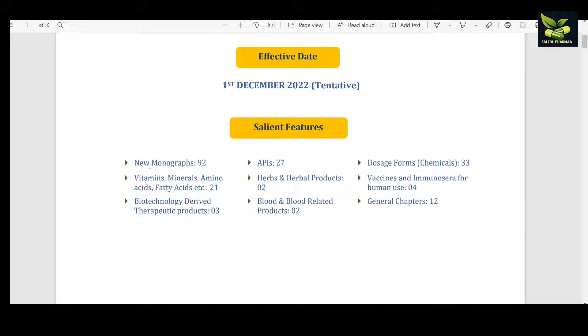The important features of this IP 2022: 92 new monographs have been included - 27 APIs, 33 dosage forms or chemicals, and 21 vitamins, minerals, amino acids, fatty acids, etc.